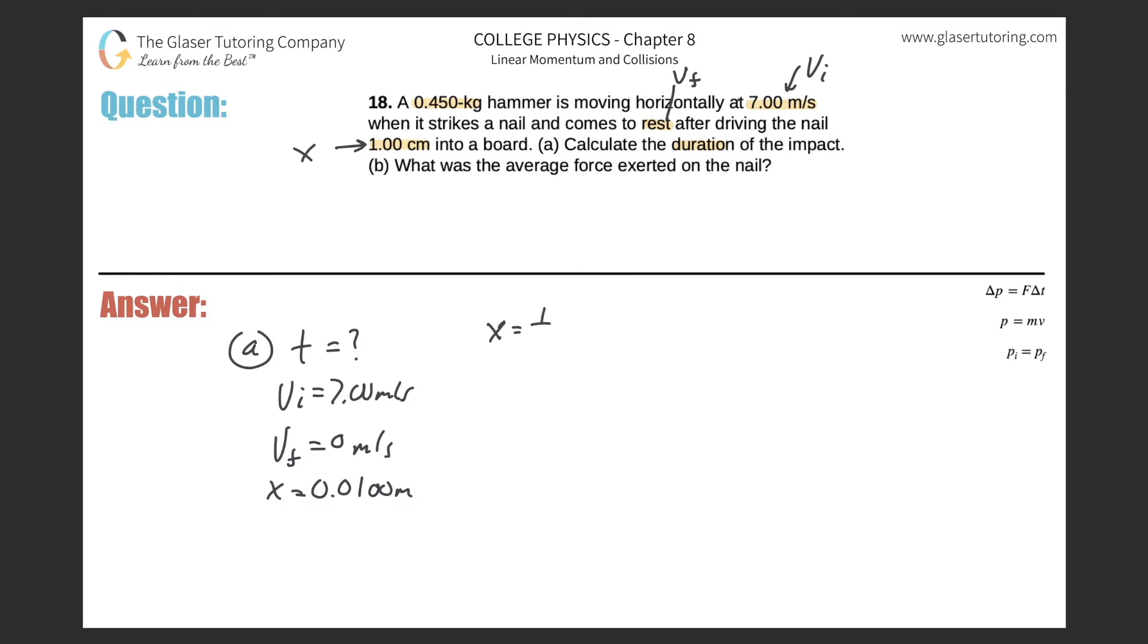What's the relationship between these four variables? Think back to kinematics. We have displacement equal to one half multiplied by the final velocity plus the initial velocity, all multiplied by time. So the displacement here was 0.01 meters, equal to one half multiplied by the final which was zero plus the initial of 7 multiplied by the time.